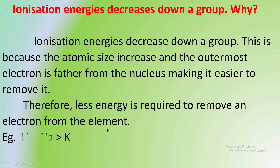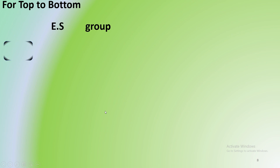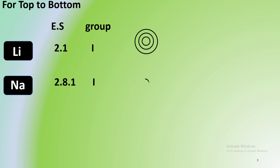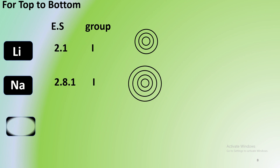Going from top to bottom — for example, lithium — the electronic structure changes. This is within a group. In the same group, going from top to bottom, ionization energy decreases because the outer electrons are further from the nucleus.